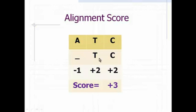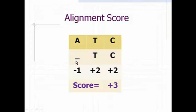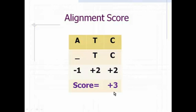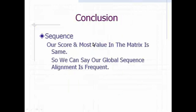Now the final step: the alignment score. We put our sequences together — here is ATC with a gap and TC with a gap. We consider our alignment score: C and C is a match, score plus 2; T and T is also a match, score plus 2; and here is a gap, so gap penalty minus 1. Adding this equation, we score 3. Our score from the alignment matches the value in our matrix, so we can confirm our global alignment is correct.